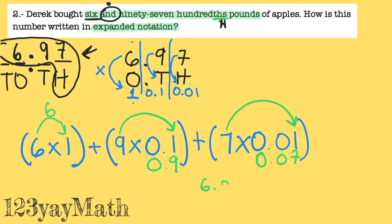6.00 plus 0.9 plus 0.07. And remember you fill with zeros. So this will be 90. It's 0.07. It's 0.96. 0.96.